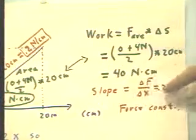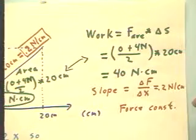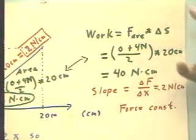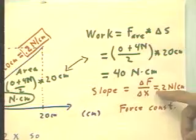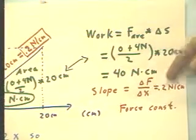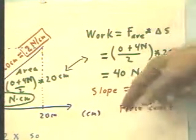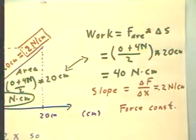Now the slope I'll mention, delta F over delta x, the change in the force over the change in the stretch, is 0.2 newtons per centimeter. That decimal might be a little hard to see, but it's there. 0.2 newtons per centimeter. We call that the force constant, and we'll be talking about that later.